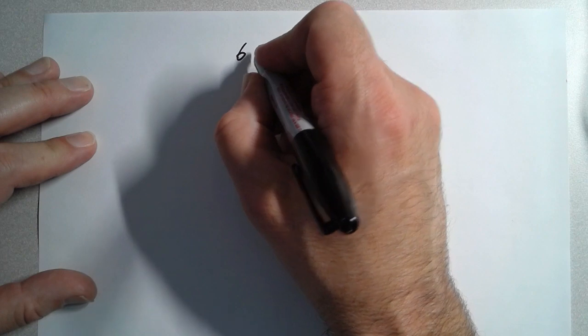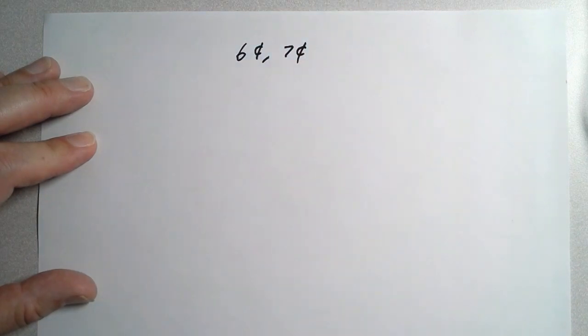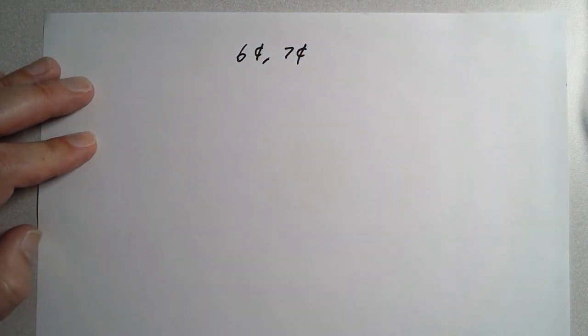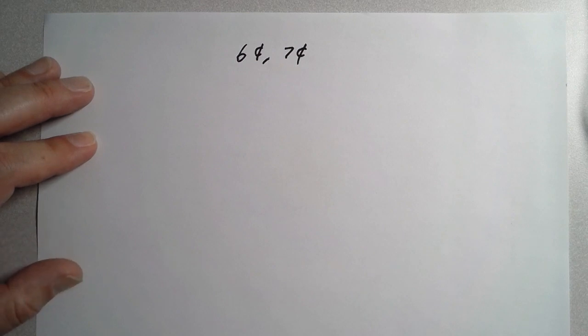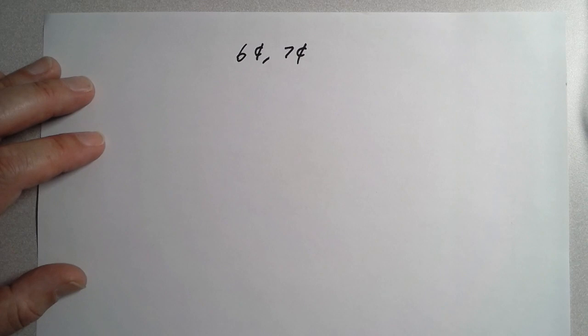I had some questions in the comments about a different kind of induction question related to stamps. In this question you were given six-cent stamps and seven-cent stamps and asked to show that you could create any combination of postage using these stamps above some value n₀. The goal was to figure out what the value of n₀ was. Someone asked for it in the form of an equation, so let's see how to do this more rigorously.